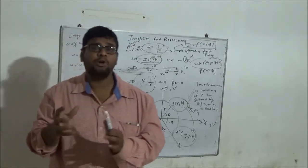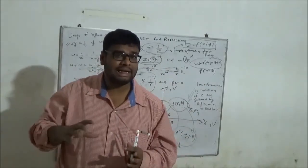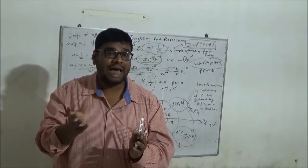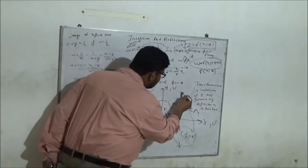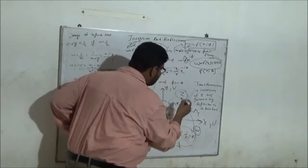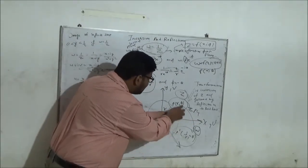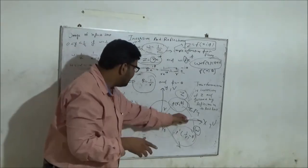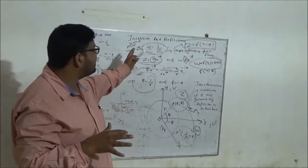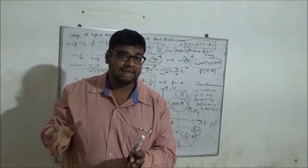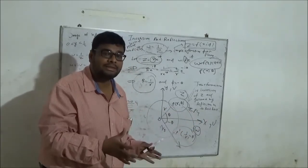So if there is any point on the z-plane and there is a relation w = 1/z, then that point will have a reflection across the x-axis on the w-plane. Because if this is the z-plane and this is the w-plane, we can clearly see that if the x-axis acts like a mirror, then P' is the reflection of P. The positive x-axis acts like the mirror, and P' is the mirror image of P — this is the geometrical property.